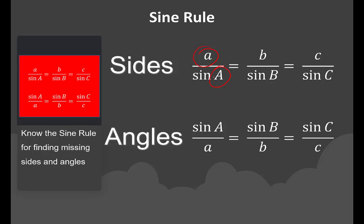The sine rule has been split into two different parts. To find missing sides: a over sine A equals b over sine B equals c over sine C. To find angles, we write it as sine A over a equals sine B over b equals sine C over c. Remember: to find the sides, the lowercase is at the top; to find the angles, the lowercase is at the bottom.